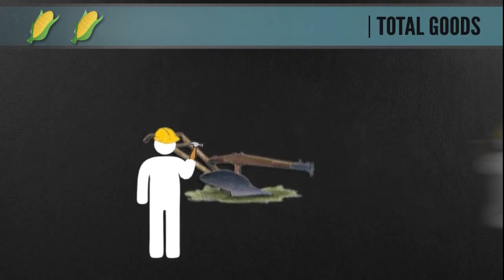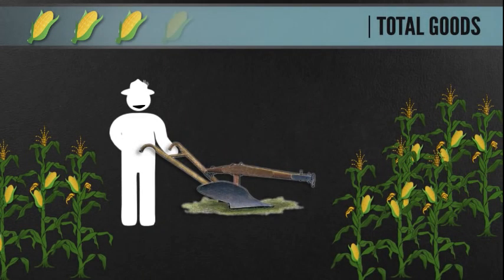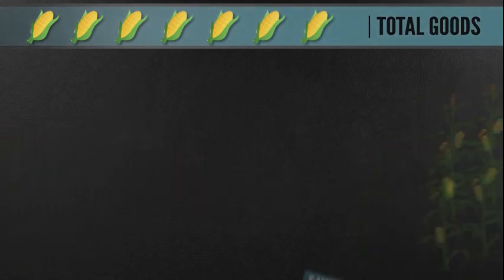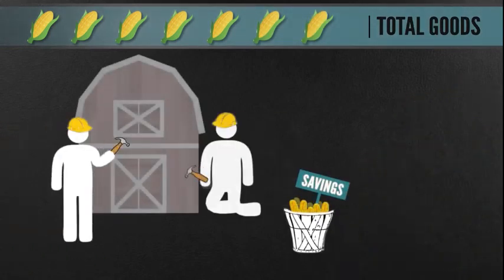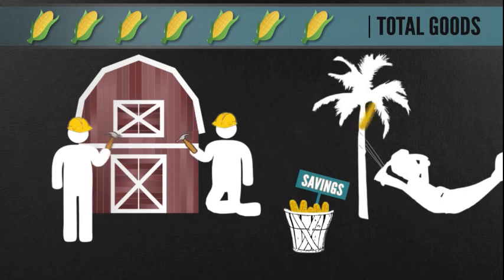Once it's finished, they can produce more efficiently. And the total amount of goods will grow. On top of that, because they no longer have to worry about starving, time is freed up. They can now choose to produce other goods or services, or just relax and enjoy their free time.